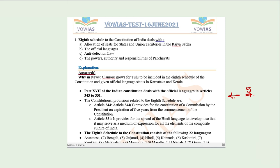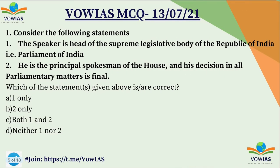Now let's begin the first question. Consider the following statements: First, the Speaker is the head of the supreme legislative body of the Republic of India, that is Parliament. Second, he is the principal spokesperson of the house and his decisions in all parliamentary matters is final. We have to choose: A) one only, B) two only, C) both one and two, D) neither one nor two.